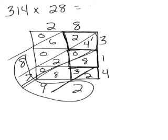So the answer to 314 times 28 is 8,792. And that's how you do lattice multiplication.